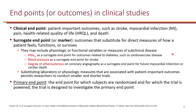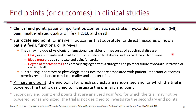Regardless of whether endpoints are clinical or surrogate, they can be either primary or secondary. Primary endpoints are actually what the study is designed for, and the reason this is important is because the design of the study is supposed to reduce any bias towards measuring that primary endpoint. That's a difficult task to reduce the risk of bias. Because it is expensive to do studies, there are also other endpoints that we will look at in the study.